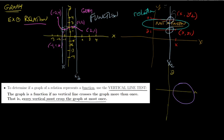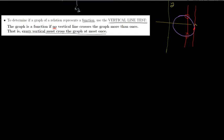The vertical line test is used to determine whether a graph represents a function or just a relation. The graph represents a function if no vertical line crosses the graph more than once. For a function, every vertical line must cross at most once. A circle, for example, is definitely not a function because you can draw a vertical line almost anywhere and it will cross more than once.